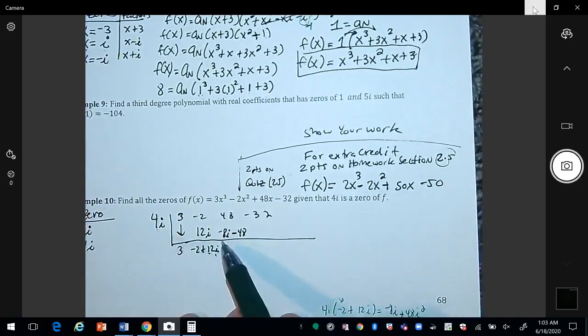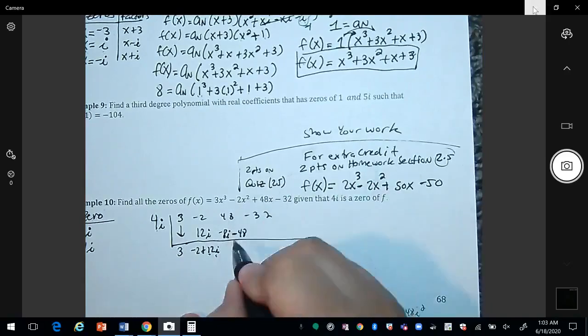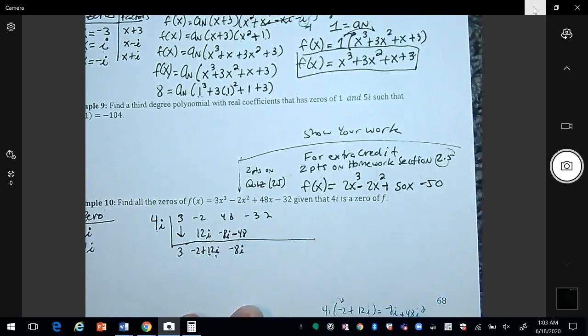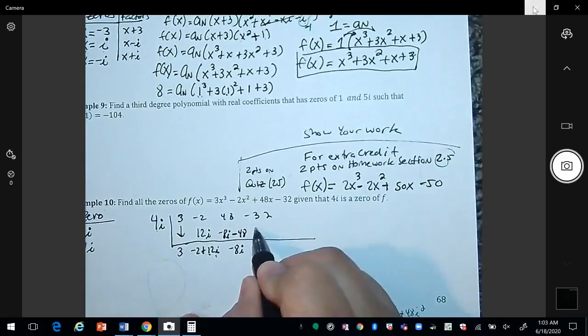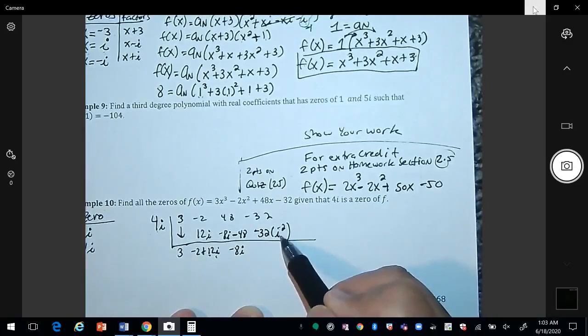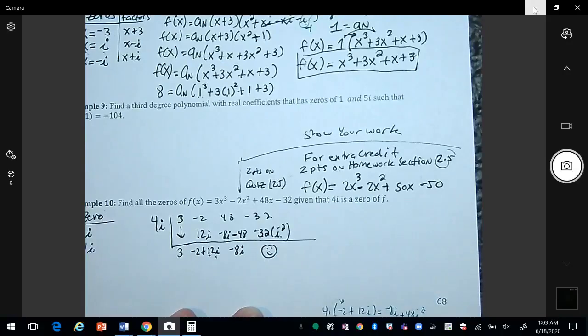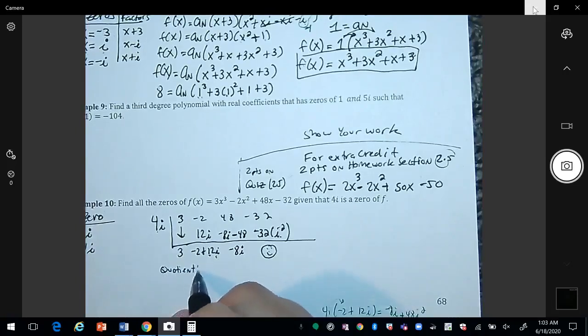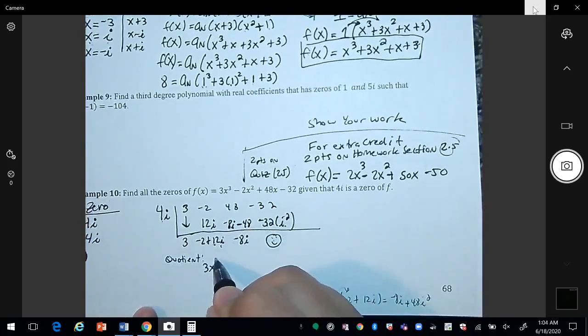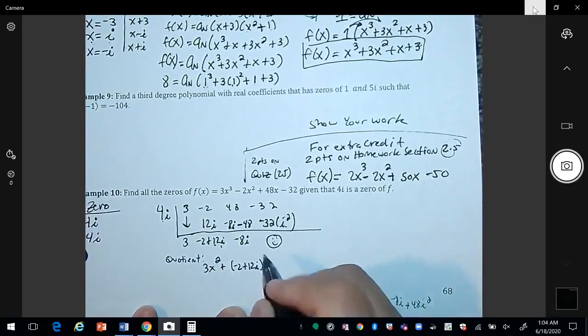So now negative 8i minus 48 plus 48, it's just gonna give me a negative 8i. Times 4i times 4, that gives me a negative 32i squared. I squared is negative, making that a positive 32 plus a negative 32, so that's gonna give me 0. So we know that that is 0. So my quotient is going to be 3x squared plus negative 2 plus 12i times x minus 8i.